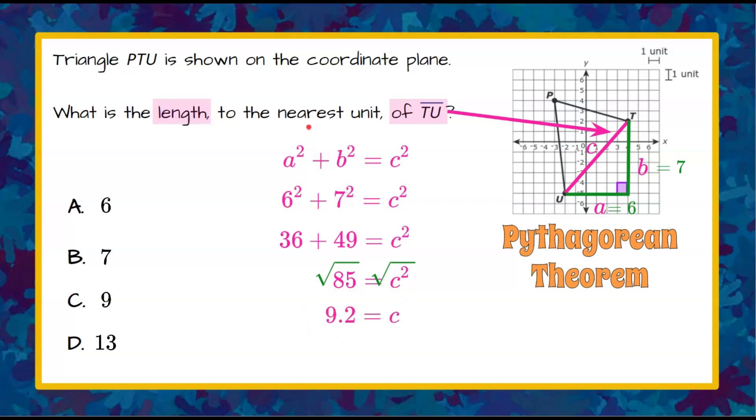One more step here. We're asked to go to the nearest unit. So that means we need to go to the nearest whole number. Because this is 0.2, it's less than 0.5, 0.5 or less, we round down. So because we're going to round down, we know that the nearest unit, segment TU, is answer choice C, 9 units long.